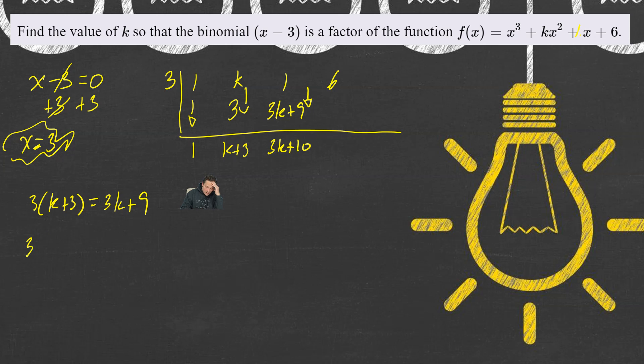So, I need to do now 3k plus 10, multiplying the 3 on the outside, up here, the root. So, when I do that, it's going to give me, let's see here, it's going to give me 9k plus 30. So, over here, under the 6, now I'm going to put 9k plus 30.